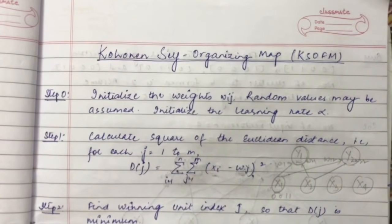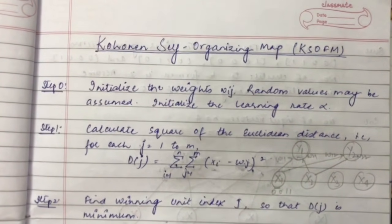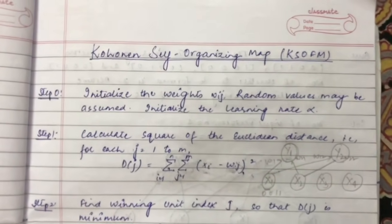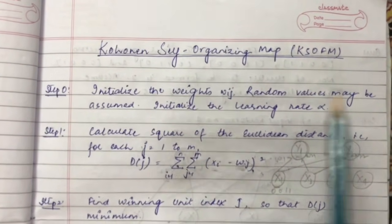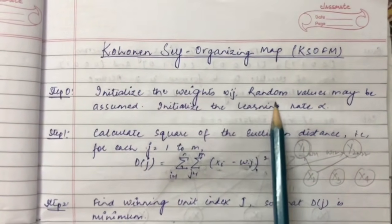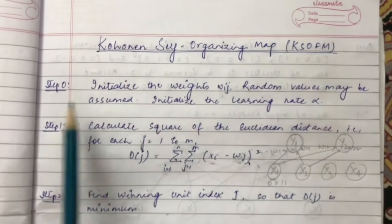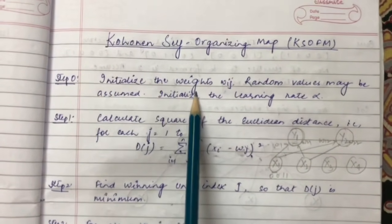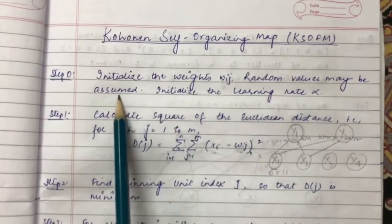Hello friends, in this video I will be talking about Kohonen Self-Organizing Map or K-SOM. Let us understand the training algorithm first and then we will do a question. Step 0 is to initialize the weights to random values and initialize the learning rate alpha.